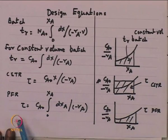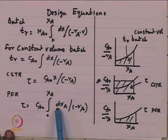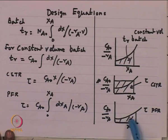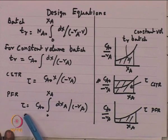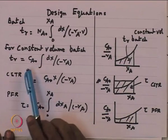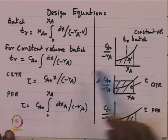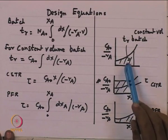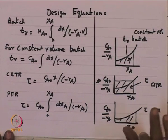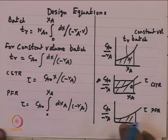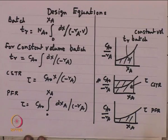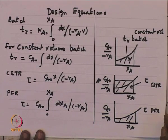The same can be done for a PFR. The residence time for a PFR is C_A0 times the integral of dX_A divided by (-r_A). Plotting C_A0/(-r_A) versus X_A, the area under the curve from 0 to X_A gives the residence time. Notice that the residence time for a PFR and the reaction time for a constant-volume batch have the same integral — we can view reaction time in a batch as equivalent to residence time in a PFR, since both describe the time fluid elements spend in the reaction environment.